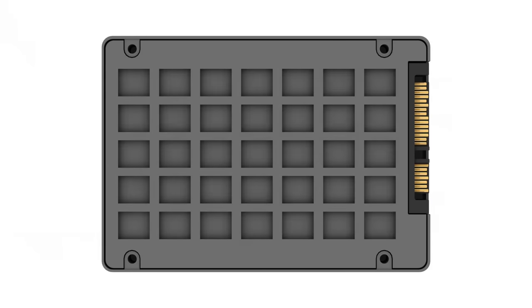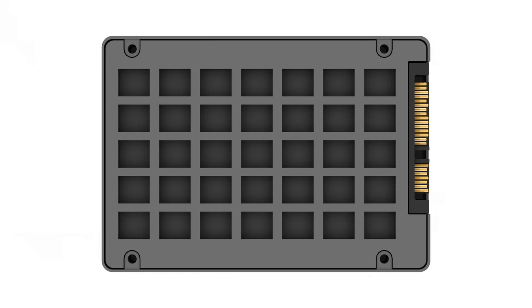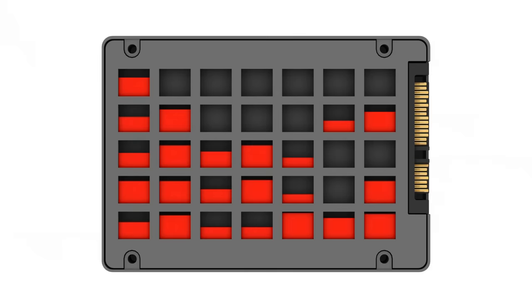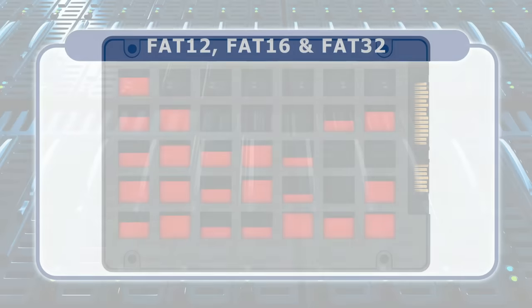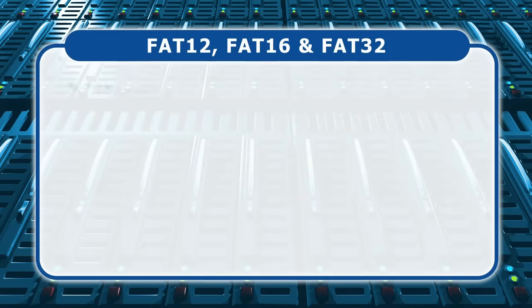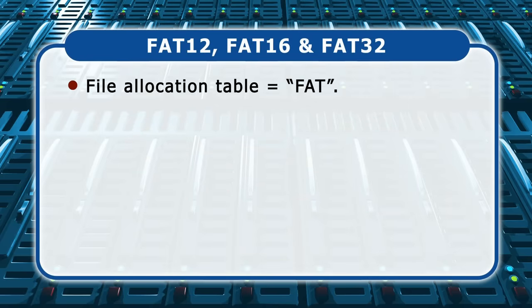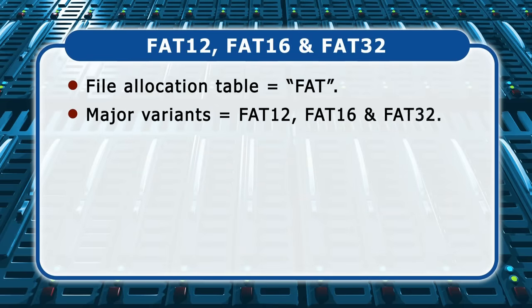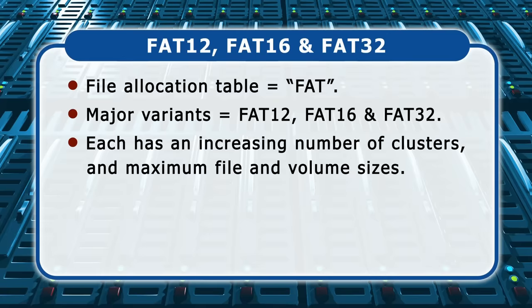So what are the differences between file systems and which should you choose? File systems divide the storage space on a drive into virtual compartments known as clusters, and maintain an index of where individual files are located and available free space. The first DOS and Windows file system was known as the File Allocation Table or FAT, with three major variants developed: FAT12, FAT16 and FAT32. Each FAT variant can divide a drive into an increasing number of clusters and supports an increasing maximum file size and volume size.